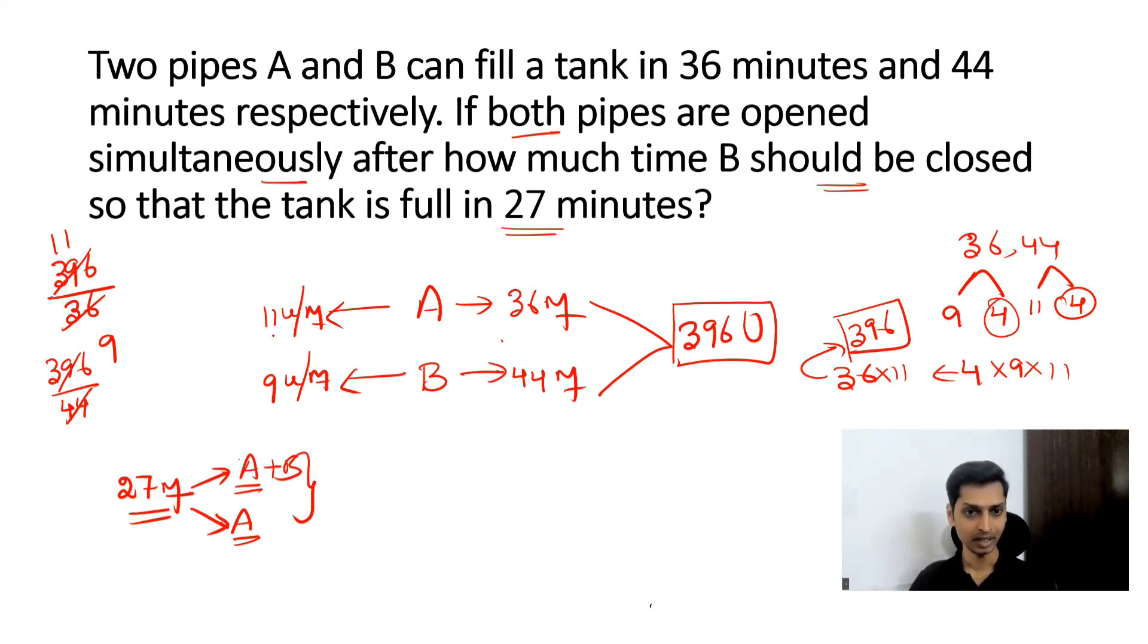And we know capacity of pipe A, that is efficiency of pipe A is 11 units per minute. So if efficiency of pipe A is 11 units per minute, for 27 minutes it will fill 27 into 11, which is 297 units. So pipe A filled 297 units in the 27 minutes.